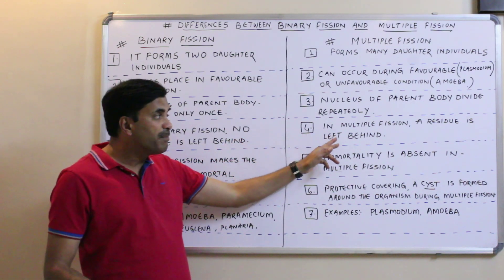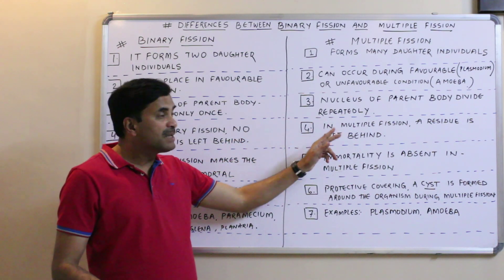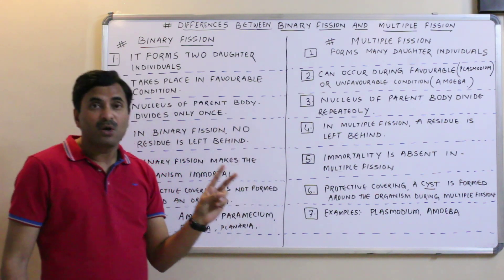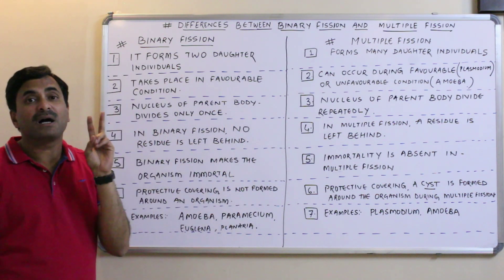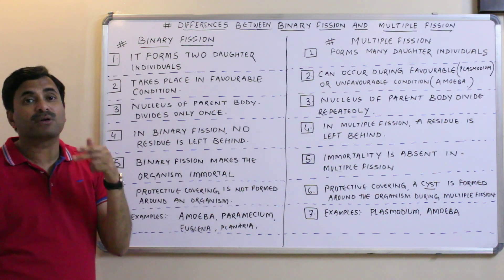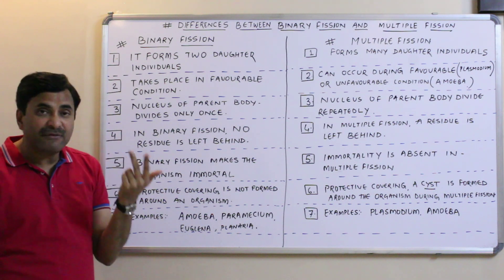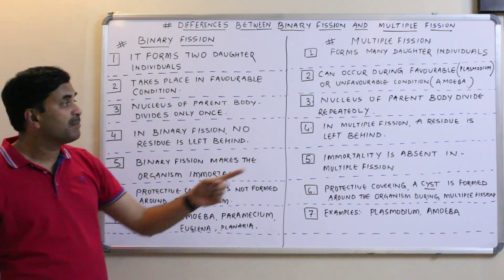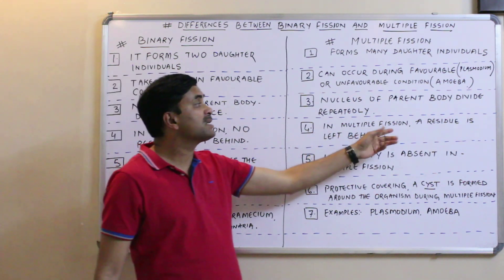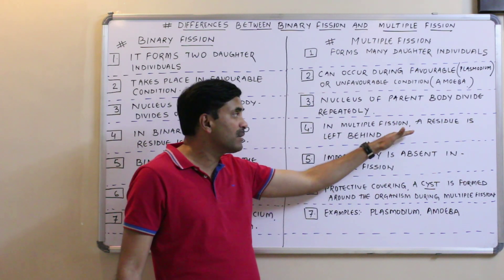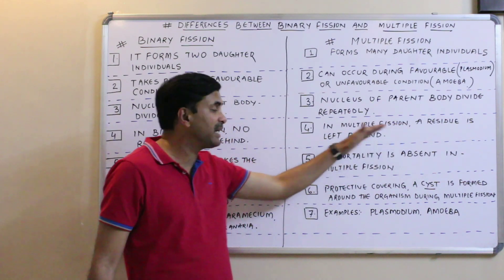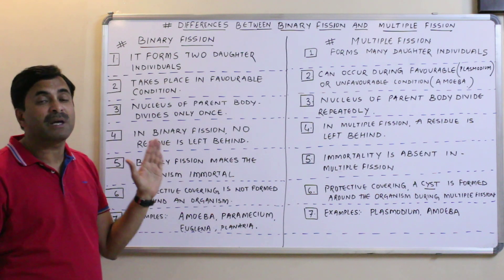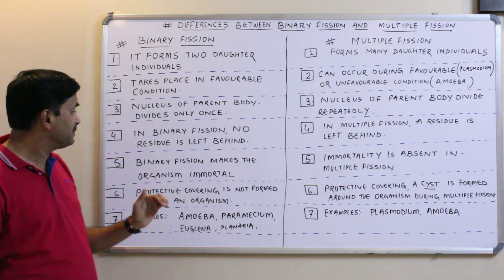In multiple fission, a residue is always left behind. A residue or dead body of the parent body is always left behind after multiple fission, whereas in binary fission, no residue of the parent body is available.